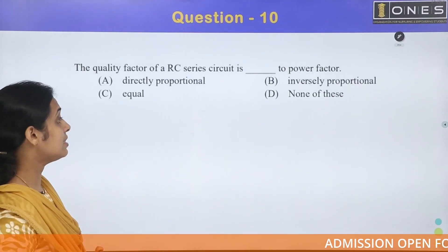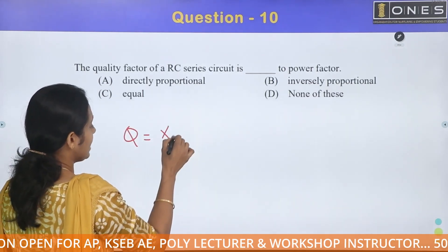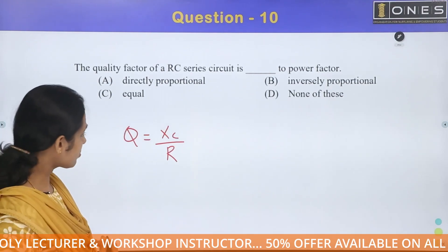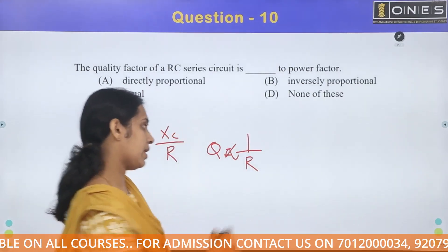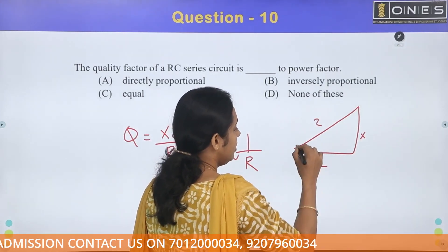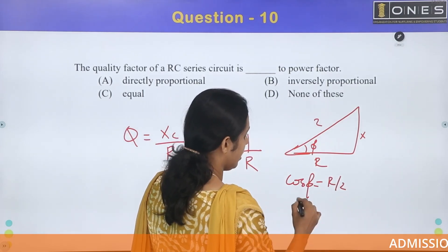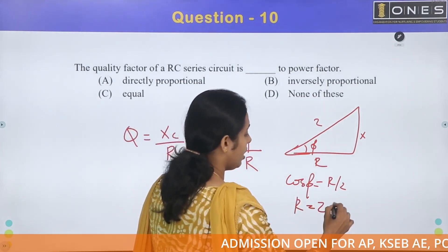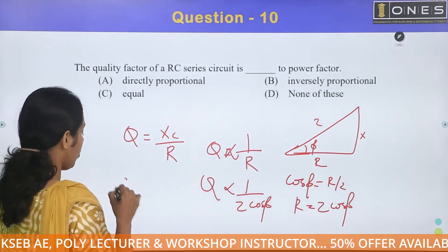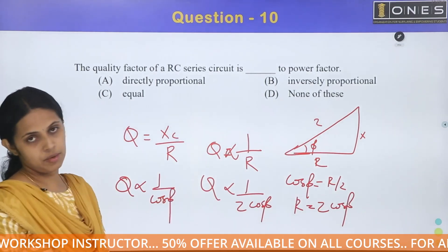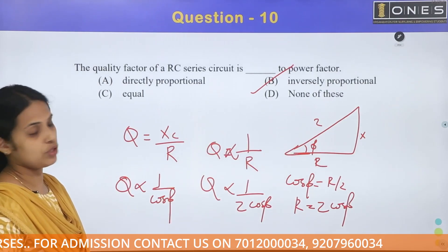Next question. The quality factor of an RC series circuit is related to power factor. Looking at the impedance diagram, cos phi equals R divided by Z, so R equals Z cos phi. Substituting into the quality factor expression — which is inversely proportional to resistance — replacing R with Z cos phi shows that the quality factor is inversely proportional to the power factor. Option B is the correct answer.